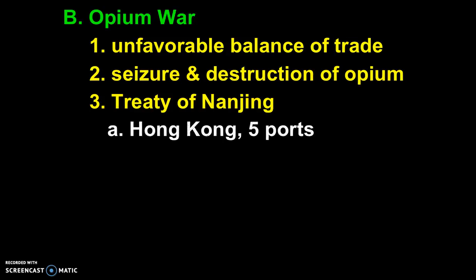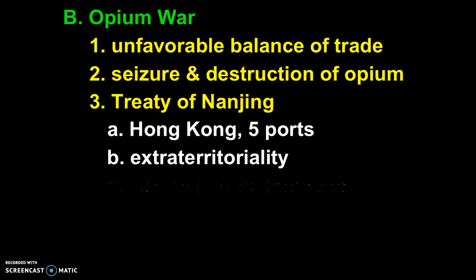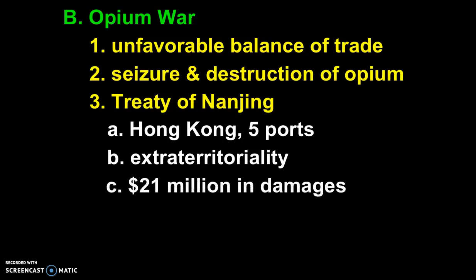The Treaty of Nanjing gave Britain the island of Hong Kong and access to five ports — so instead of one port, five ports. In each of those five ports, Britain got to practice extraterritoriality, which meant there were special zones where British laws applied, not Chinese laws. And since the sale of opium was legal in Britain, they could continue to sell opium in China. China also had to pay for the war and the damages — notably, the word 'opium' is never even mentioned in the treaty; it just says 'damages.'